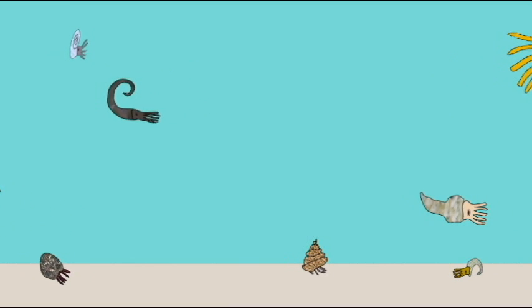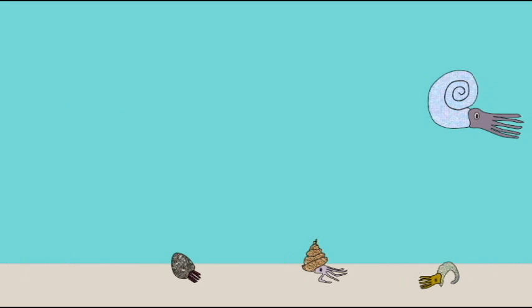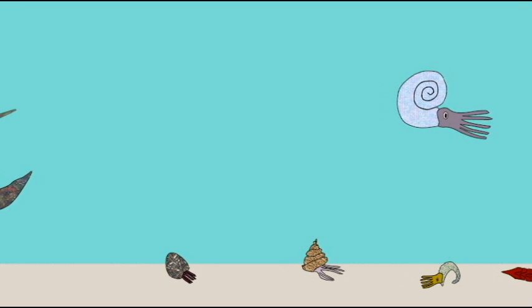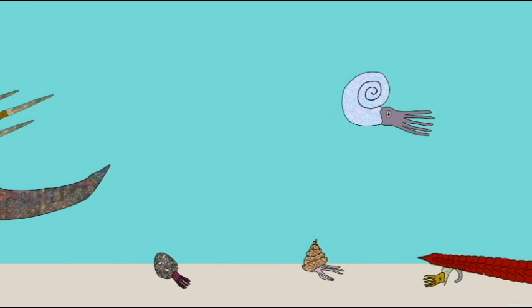By the early Cambrian and Ordovician, orthocones could reach lengths of 4 meters, and some may have reached lengths of 11 meters. The common ammonoids were very common during the Mesozoic era.